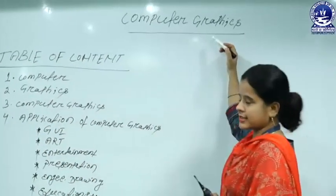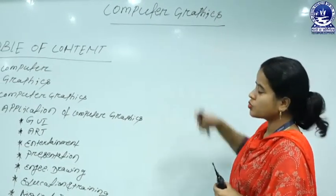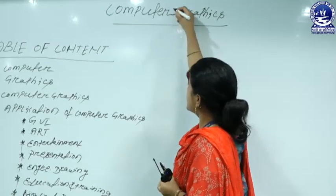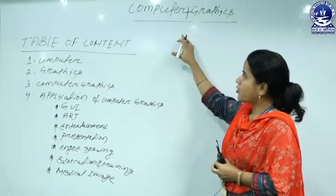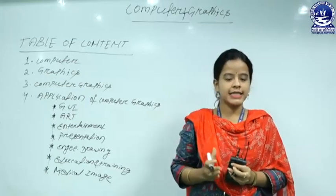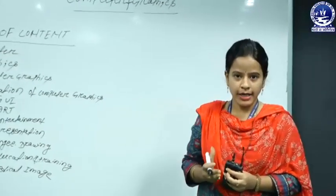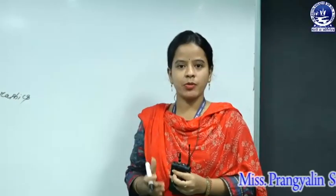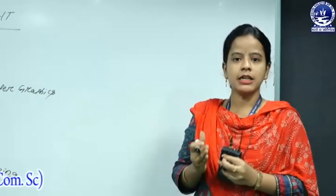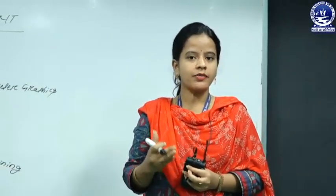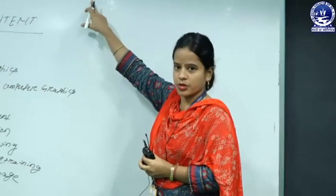Computer graphics is normally created by consisting two associated words: one is 'computer' and another one is 'graphics.' The computer is an electrical machine which accepts some data as input, processes it through the help of processors, and finally provides the desired outcomes as per the instructions given. It also allows storing desired outcomes for future reference.